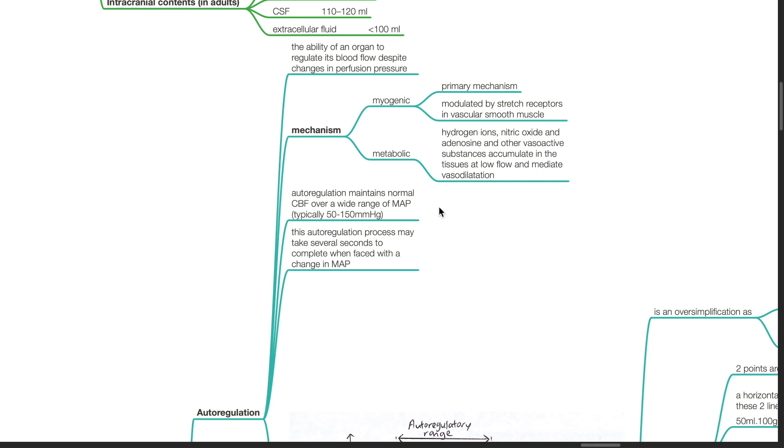Autoregulation maintains normal CBF over a wide range of MAP, typically 50 to 150 mmHg. This autoregulation process may take several seconds to complete when faced with a change in MAP.